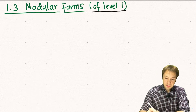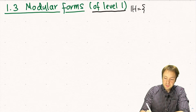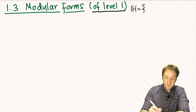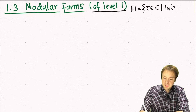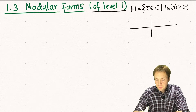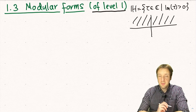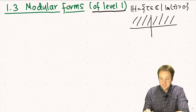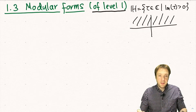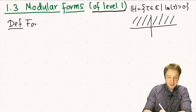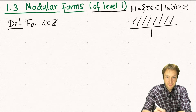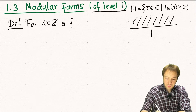So what is a modular form? A modular form is a function in the upper half plane. Let us denote by H the set of all complex numbers tau such that the imaginary part is strictly greater than 0. If this is the complex plane, then H is just the complex upper half plane, not including the real axis. The definition is: for an integer k, a modular form is a holomorphic function f in the upper half plane.